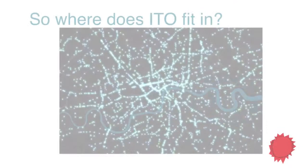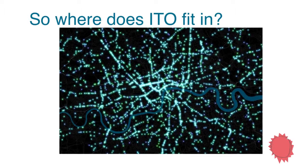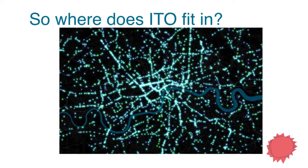So where does ITO fit into all this? ITO is very good at engaging the community, decluttering, and separating data sets. For example, this visualization shows bus service frequency in London — the intensity represents the frequency of bus services, and you can clearly see Oxford Street, Edgware Road, and Kent Road. It's a nice way of displaying the data.